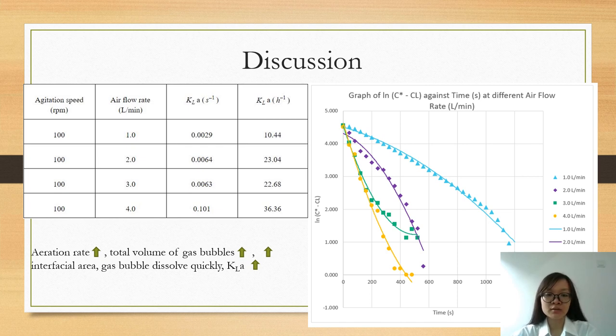From the result obtained, the KLA values for aeration at 1, 2, 3 and 4 litre per minute are 10.44, 23.04, 22.68 and 36.36 per hour respectively.